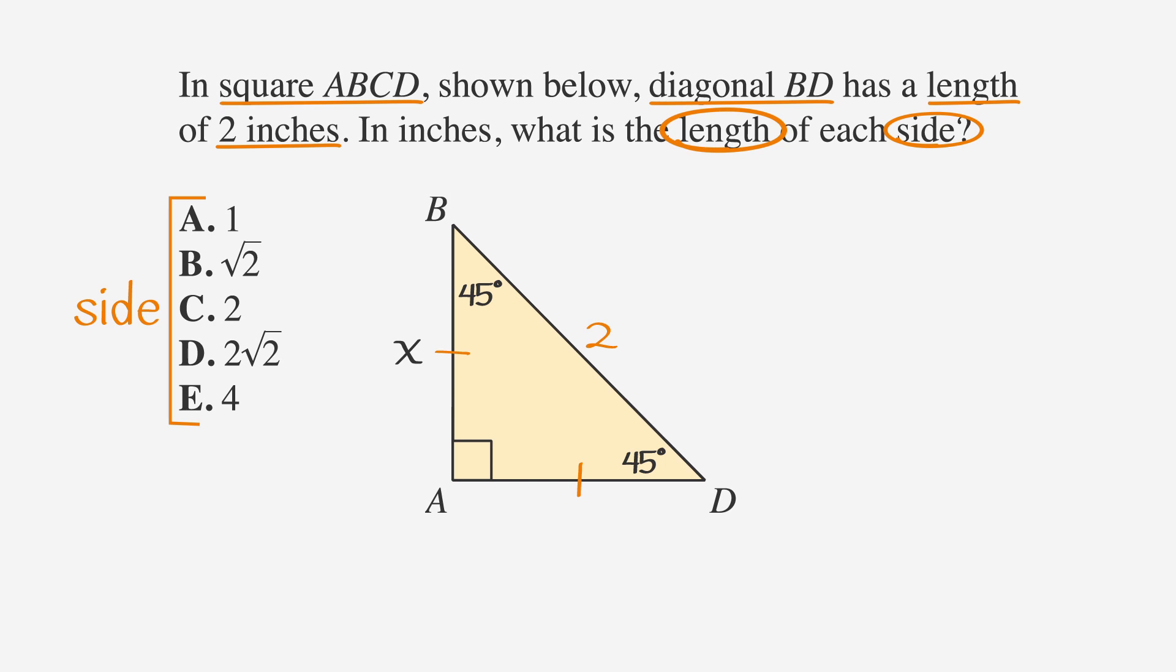Remember the rules for the 45-45-90 triangle we just talked about? The length of each leg is x, and the length of the hypotenuse is x times the square root of 2.